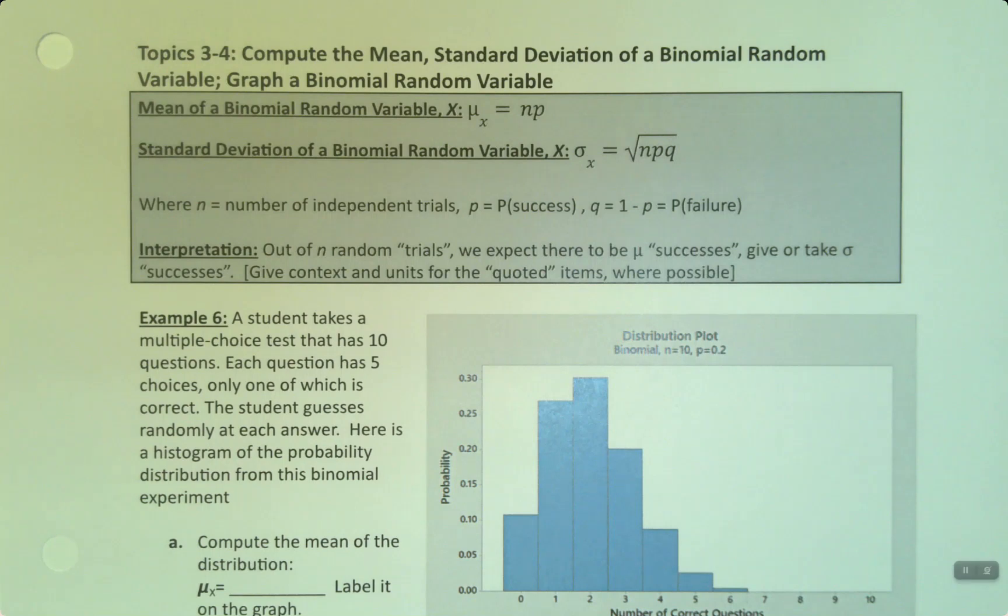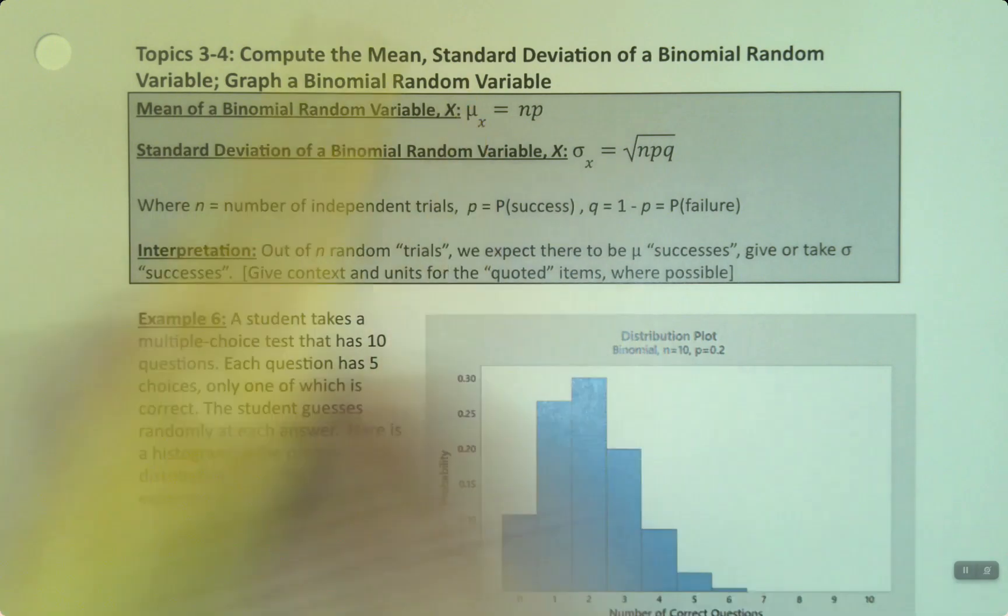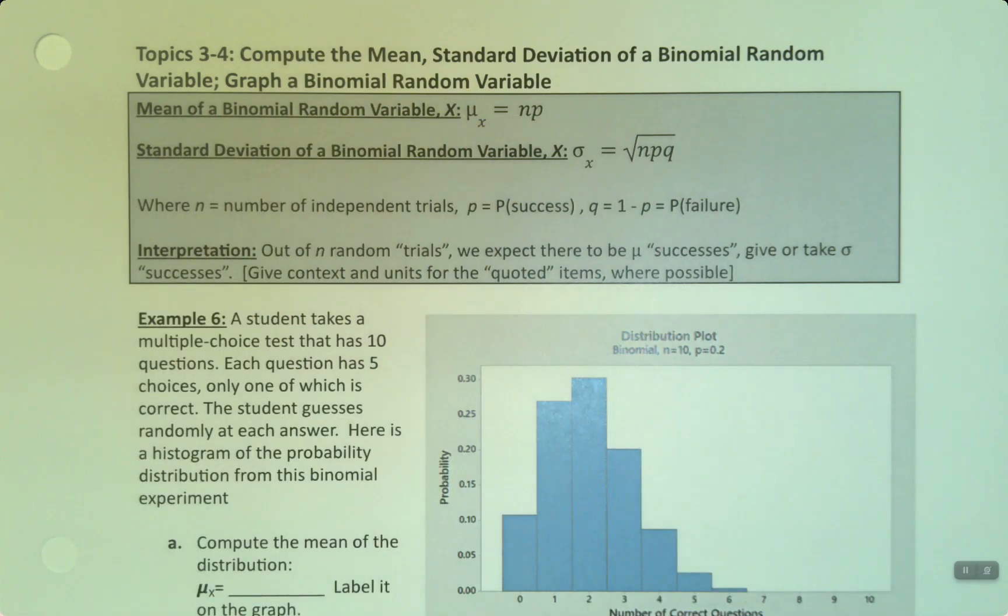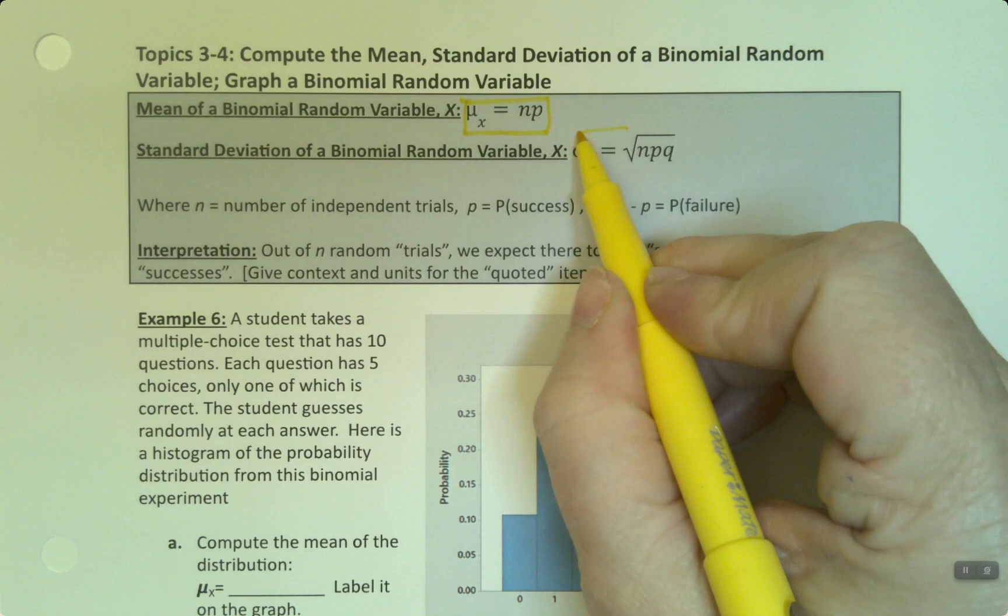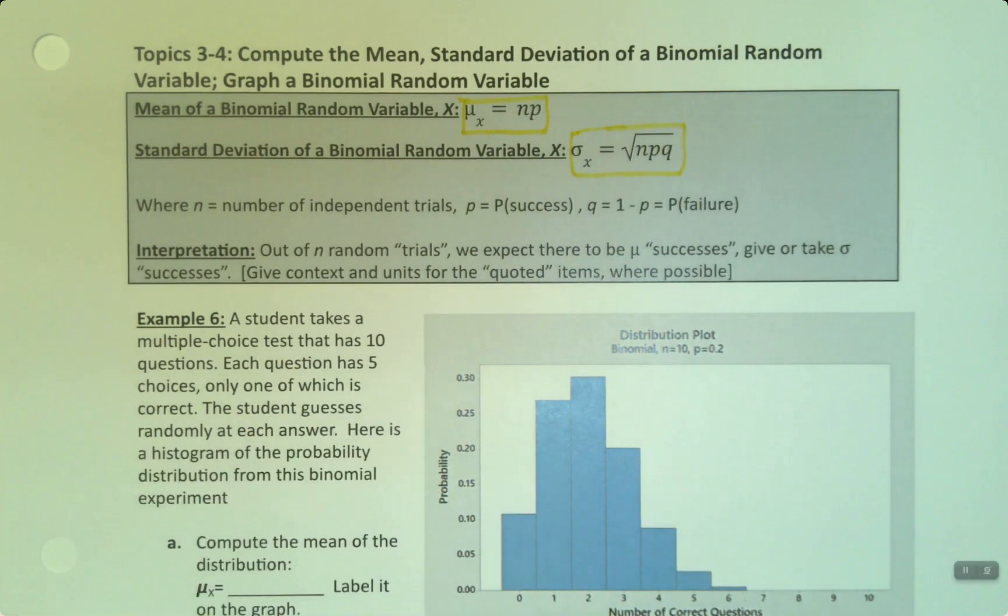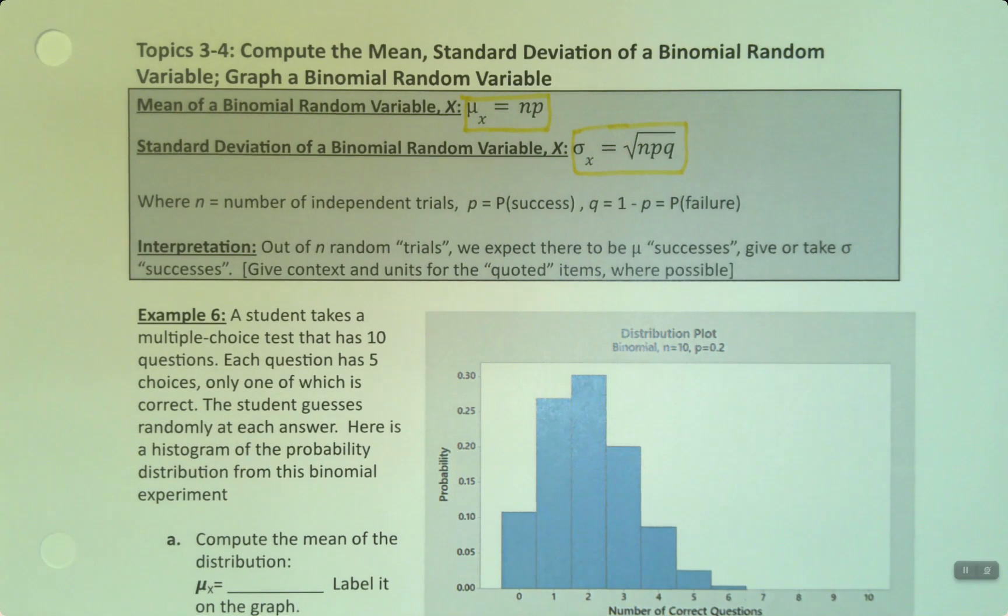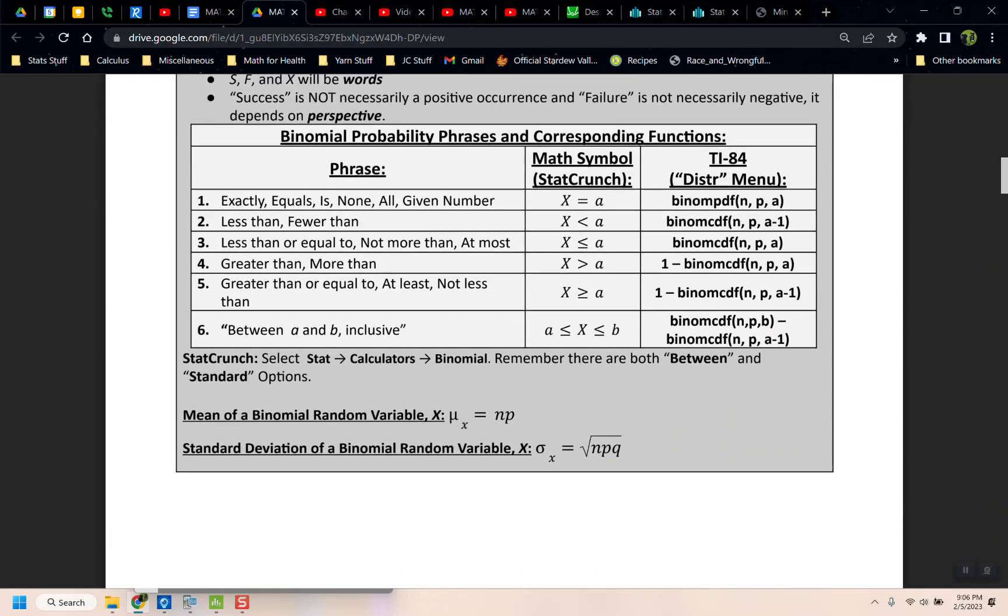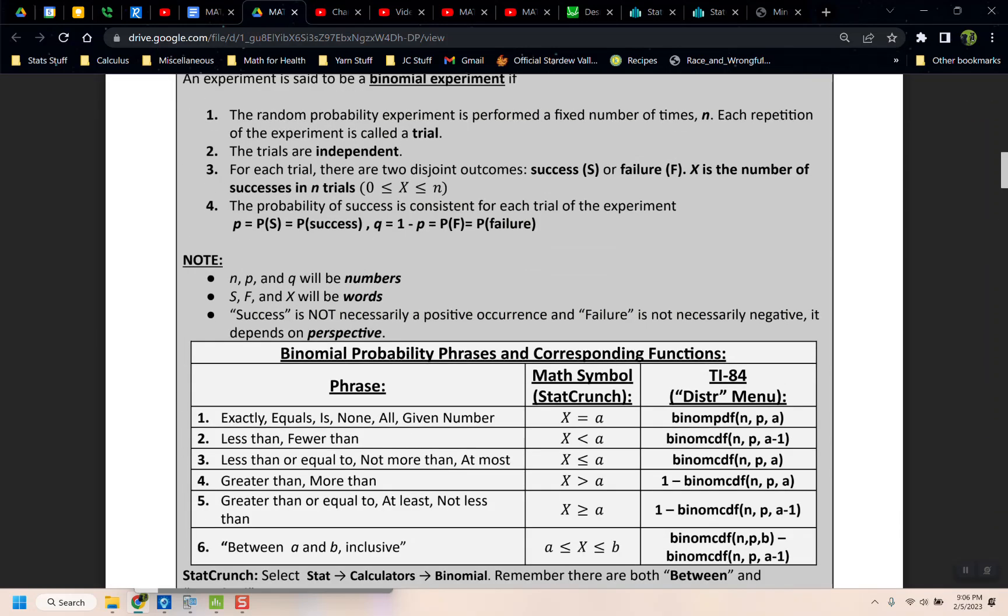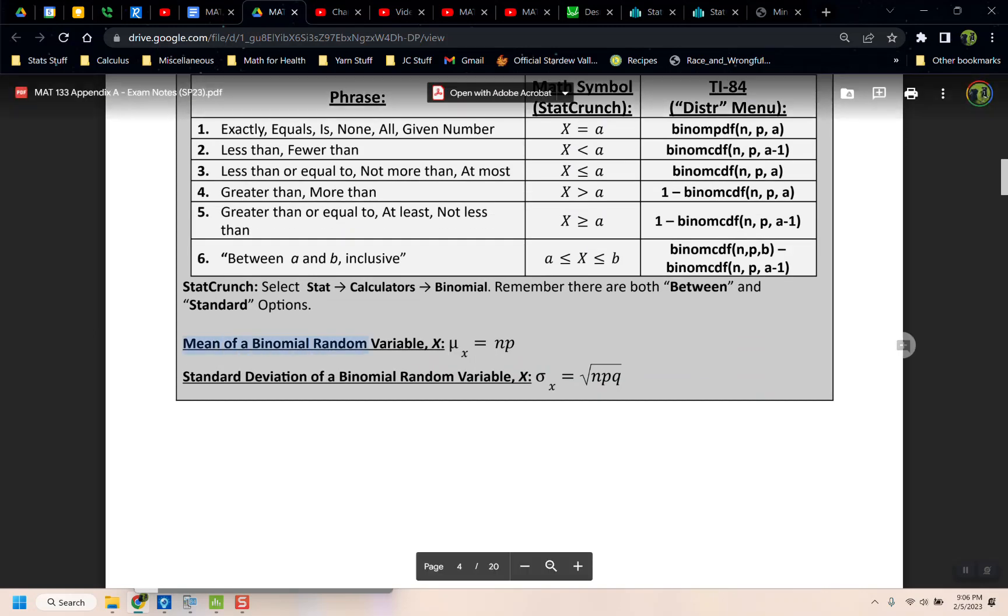For our last bit of topics here, we want to be able to compute the mean and standard deviation of a binomial random variable. And this isn't really hard because there's formulas for them. Because binomial distribution follows this particular pattern, which mathematically allows for the mean to just be this formula, and the standard deviation to be this formula, period, the end. And they're on your note sheet, if you look at your exam notes sheet.